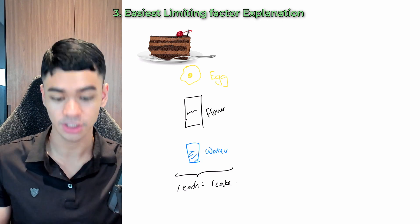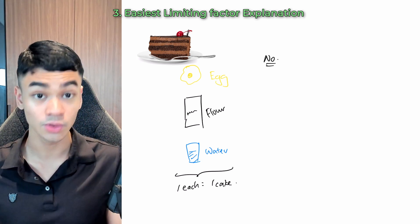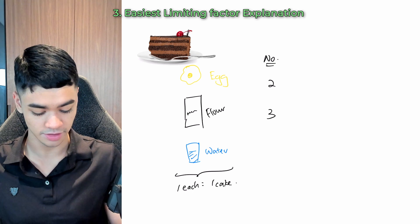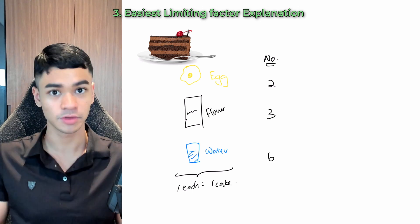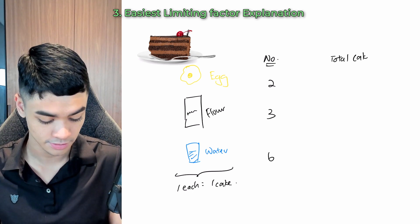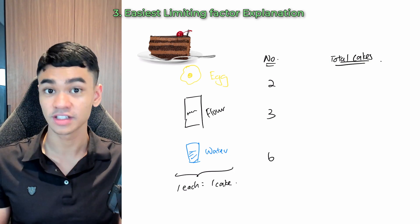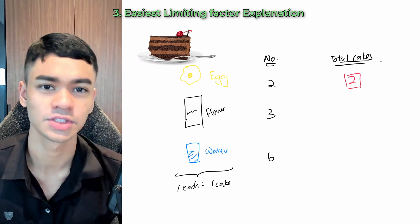So each of these gives me one cake. So let's say in my kitchen, I have these numbers of each: two eggs, I have three packs of flour, and I have six cups of water. So simple question, how many total cakes can I make? So if you say two, that is correct.